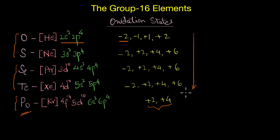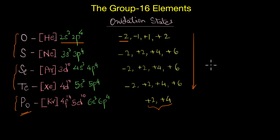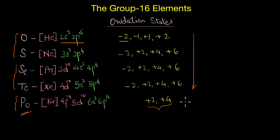Why does oxygen not show a +6 oxidation state? Obviously, because you're asking a highly electronegative element to give up electrons — not just one or two, but literally six of its valence electrons. That's not even a reasonable expectation, so oxygen will never show a +6 oxidation state.